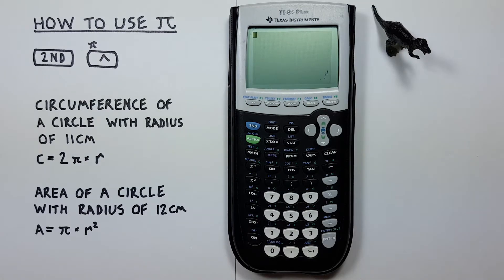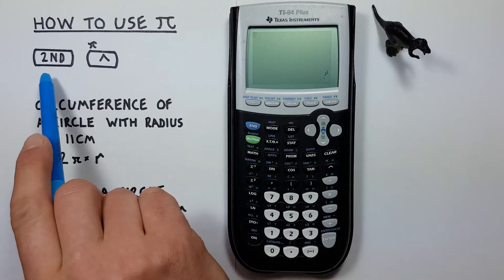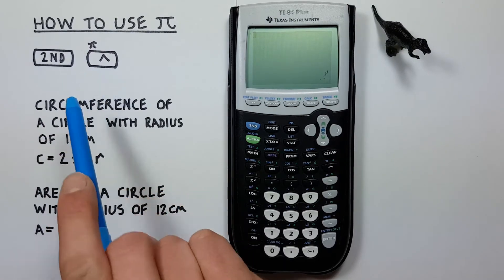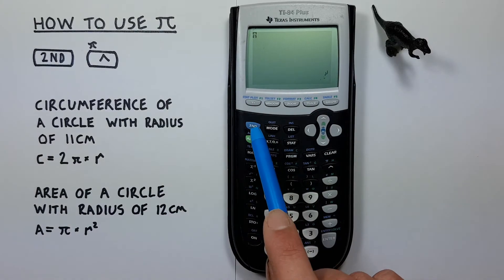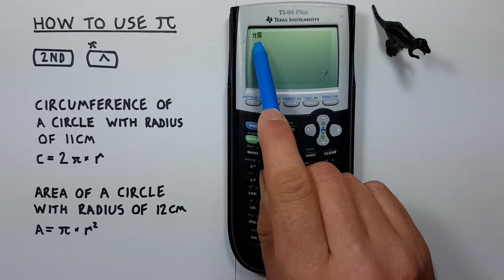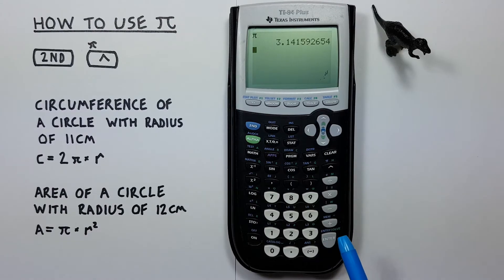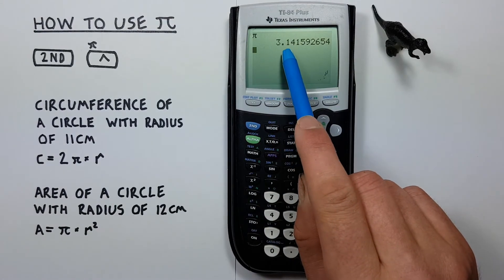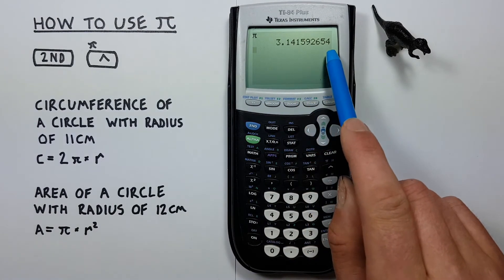If we just want to enter PI on our screen we need to use the second function of our exponent key. To do that we press the second key and then the exponent key and we see we now get the PI symbol on our screen. So if we press enter we see we get 3.14159 which is PI.